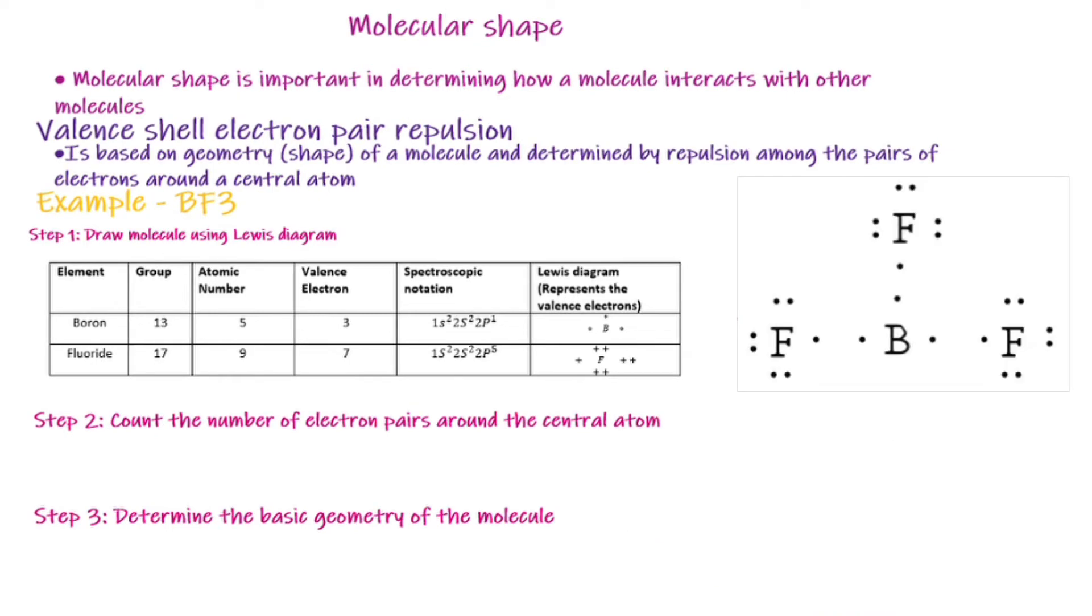Since we are dealing with 3 fluoride elements and 1 boron, the structure here can be expressed as shown. Step number 2 will be to count the number of electron pairs and the lone pairs around the central atom.